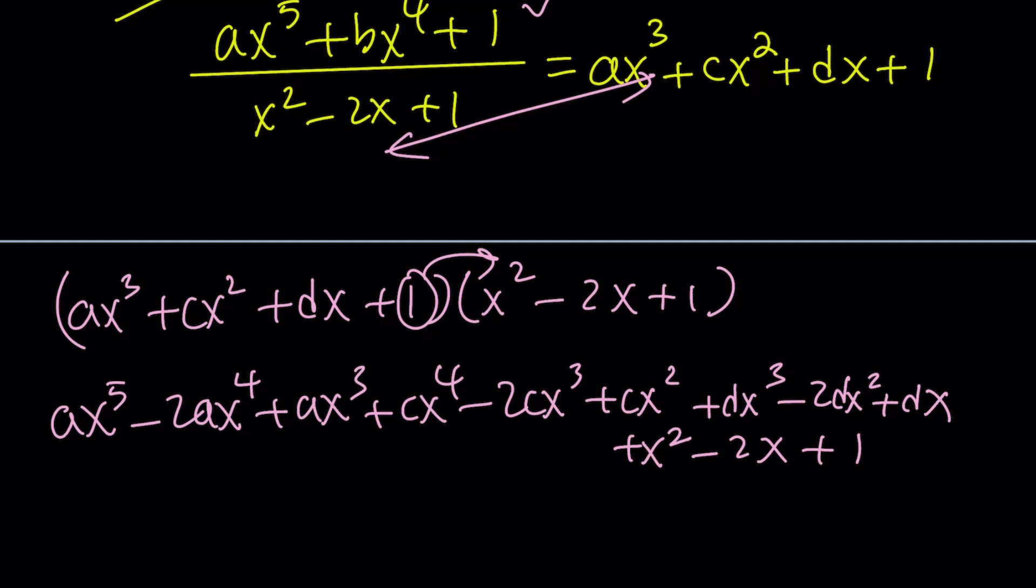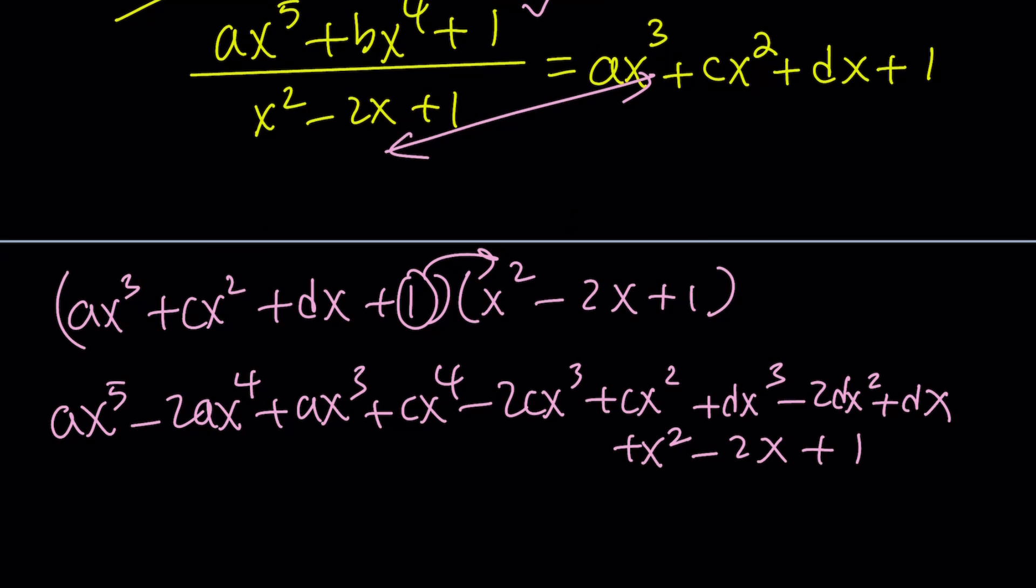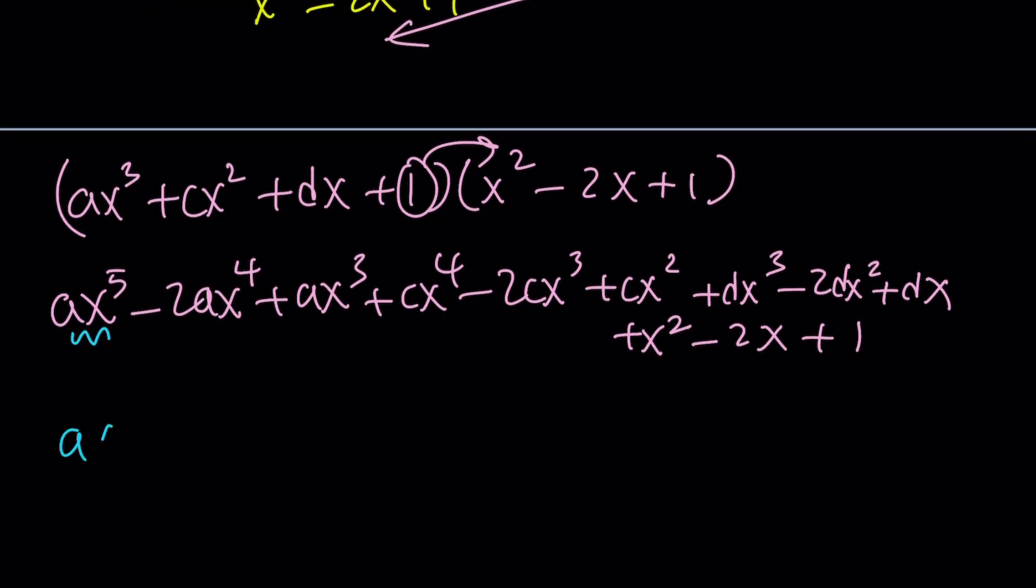So let's go ahead and simplify this by combining like terms. So, which terms are like terms? First of all, this one is going to be by itself because that's the highest power, ax to the fifth. And then I have the fourth powers. Let's go ahead and take a look at x to the fourth. c minus 2a. That's going to be the coefficient of x to the fourth. And then I should have x cubed, but we do have quite a few. So let's see. We have a, we have plus d, and then minus 2c.